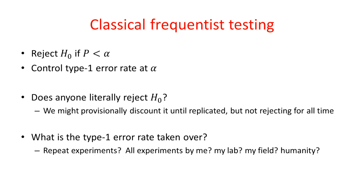When we do classical frequentist testing, we reject the null hypothesis when the p-value is less than a fixed value alpha, and this has the effect of controlling the type-1 error rate at alpha.